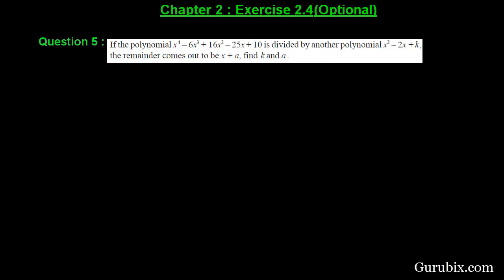Welcome friends. Let us solve question number 5 of Exercise 2.4 of Chapter 2. The question is: if the polynomial x raised to the 4th power minus 6x cubed plus 16x squared minus 25x plus 10 is divided by another polynomial x squared minus 2x plus k, and the remainder comes out to be x plus a, then find the value of k and a. This is a very interesting and important question for examination purposes.